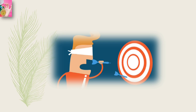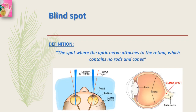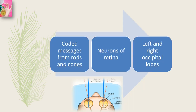Would you be surprised to learn that you are partially blind in each eye? The spot near the center of the retina where the optic nerve is attached contains no rods or cones. Because there is no visual receptor at this point, it is known as the blind spot — the spot where the optic nerve attaches to the retina, which contains no rods and cones. We are not normally aware of this blind spot because we fill in the missing information during the process of seeing, using information coming in from other parts of the retina. Coded messages from the rods and cones are processed in a preliminary way in the neurons of the retina and are then sent to the visual areas of the left and right occipital lobes of the cerebral cortex for interpretation.